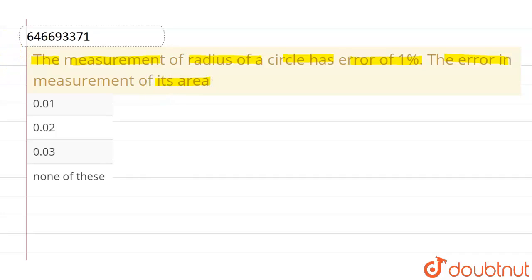So what we are given? We are given that error in radius, which is Δr/r × 100 is given as 1%. We have to find out the error in measurement of area.